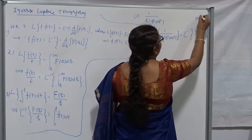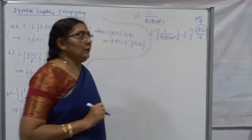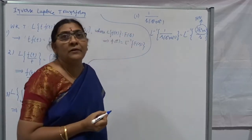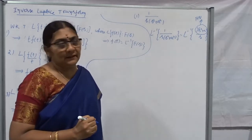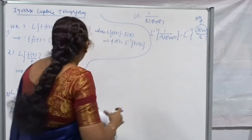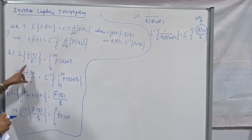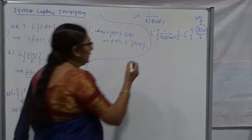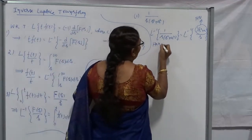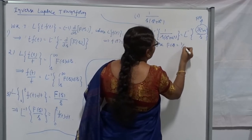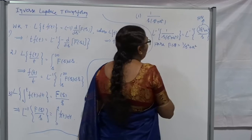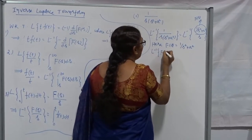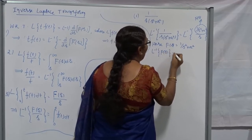You already know that L-inverse of 1/(s² + a²) is nothing but (1/a)·sin(at), which we discussed in the last class. Therefore, I will apply the formula L-inverse of F(s)/s. In this case, my F(s) is 1/(s² + a²). It's possible to find the inverse of F(s), and also it's possible to integrate after we get f(t). What is the inverse of this function? It's nothing but (1/a)·sin(at).